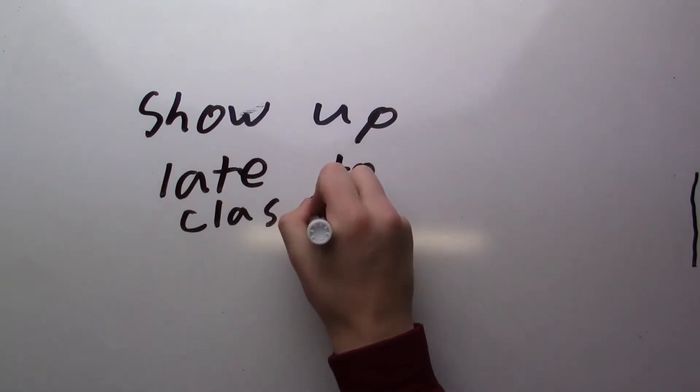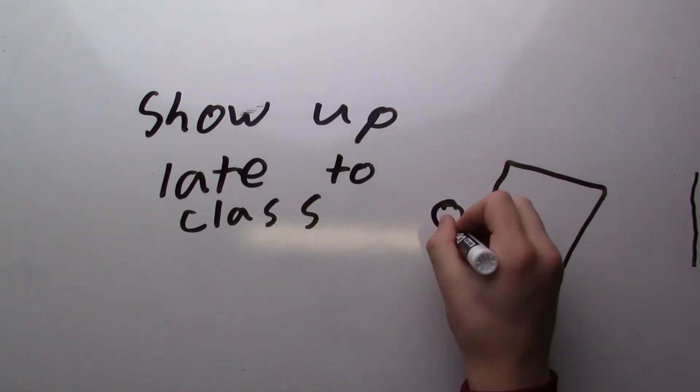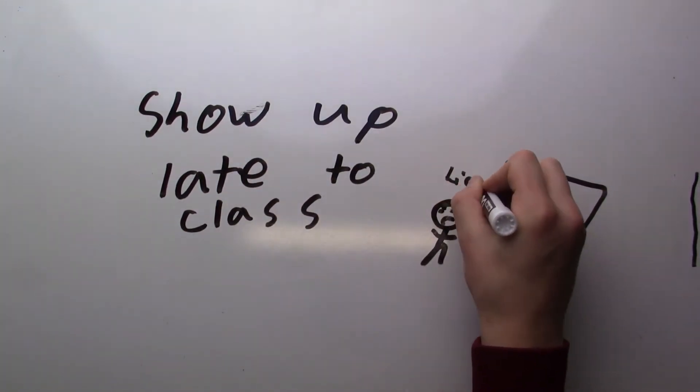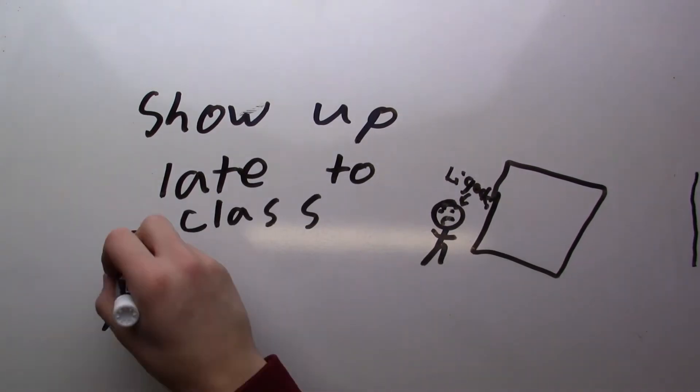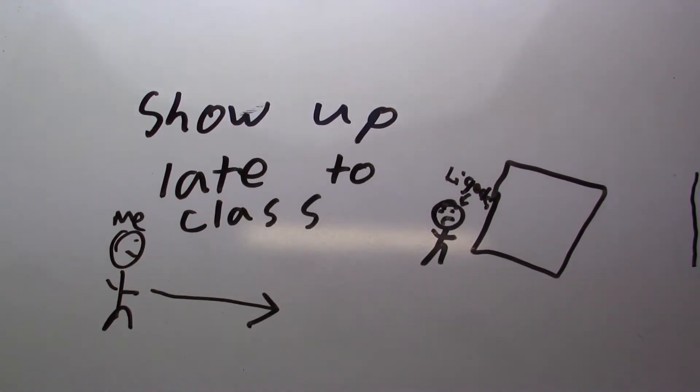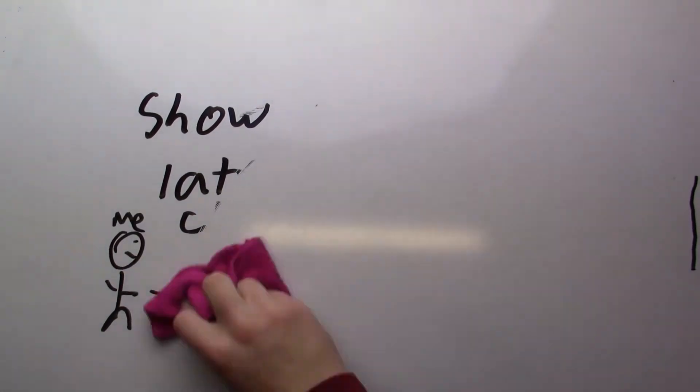Step two: show up at least three minutes late to every class. When you come in late, Alan will be presenting something on the computer. When you come in late, you will disturb him. He does not like this.